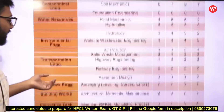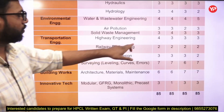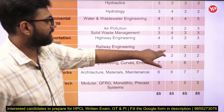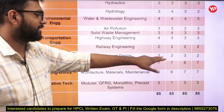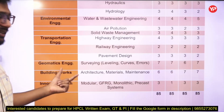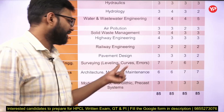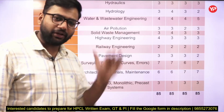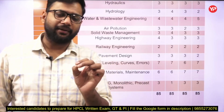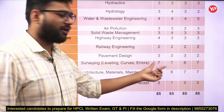Transportation engineering covers highway engineering, railway engineering, and pavement design. Highway engineering has three to four marks, railway engineering has two questions, and pavement design has three questions. In geomatics and surveying, there is a fixed pattern — fixed questions come only from leveling, curves, and errors.